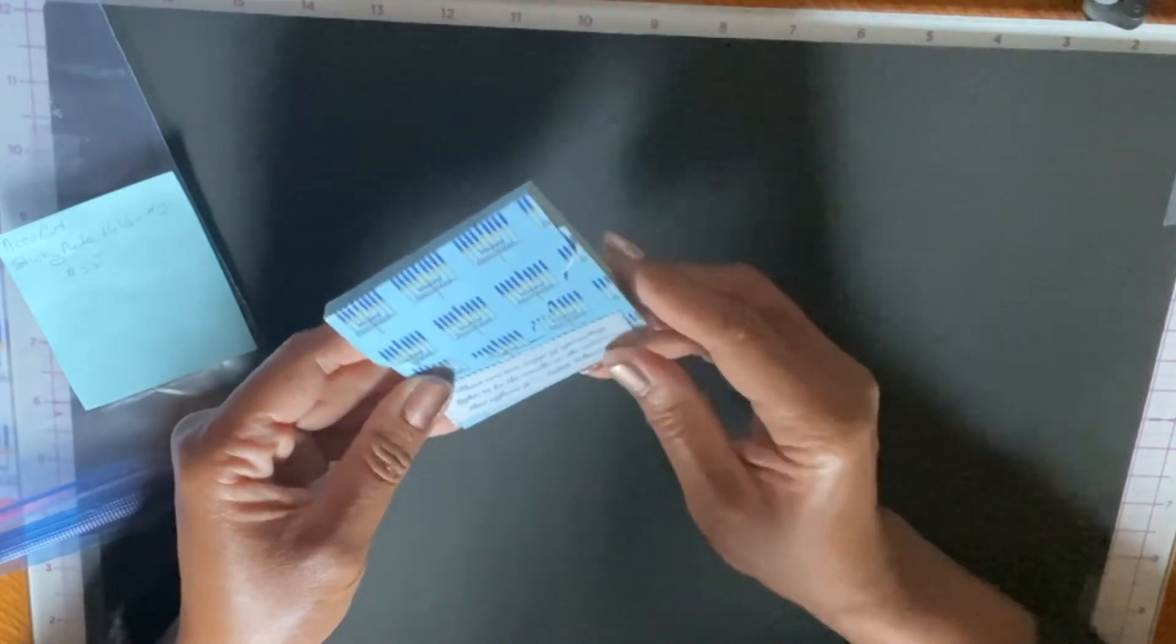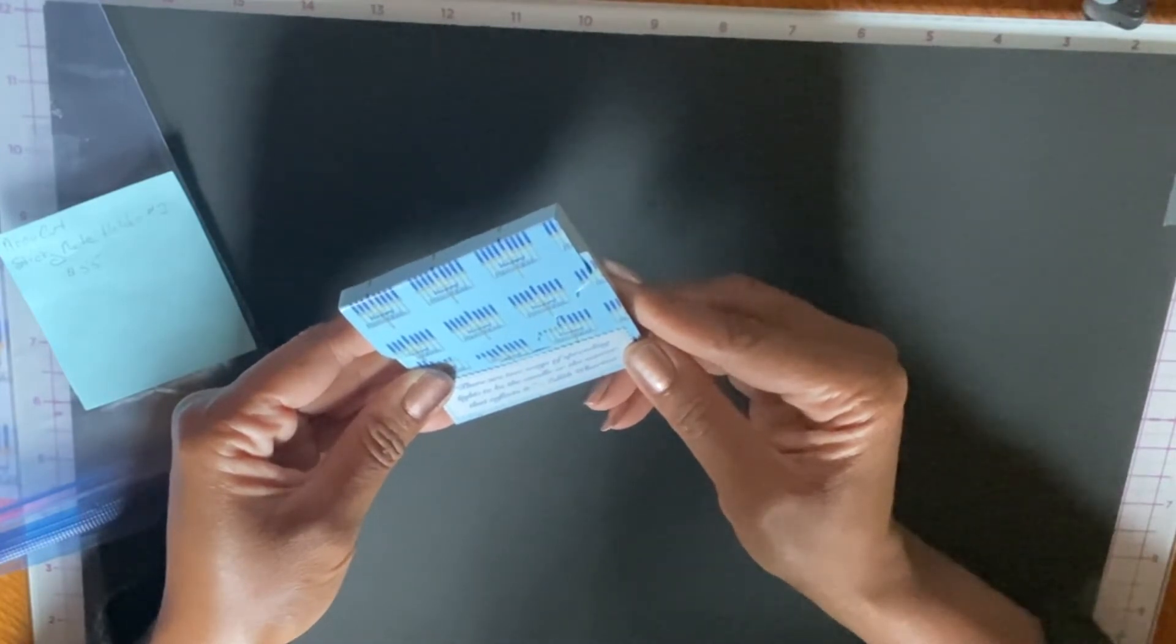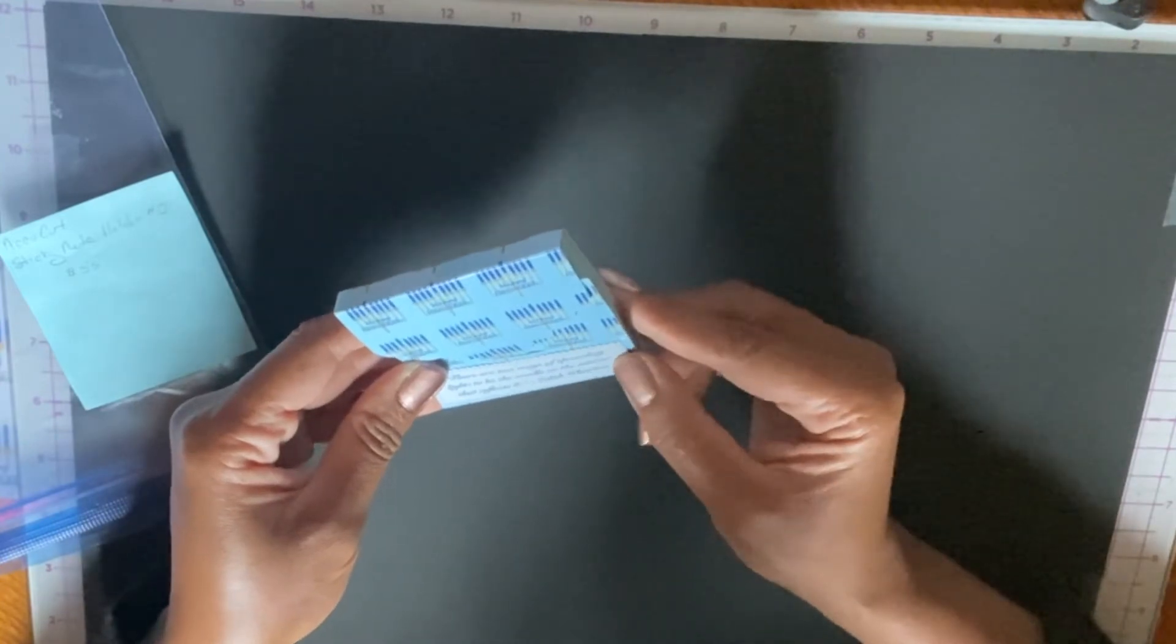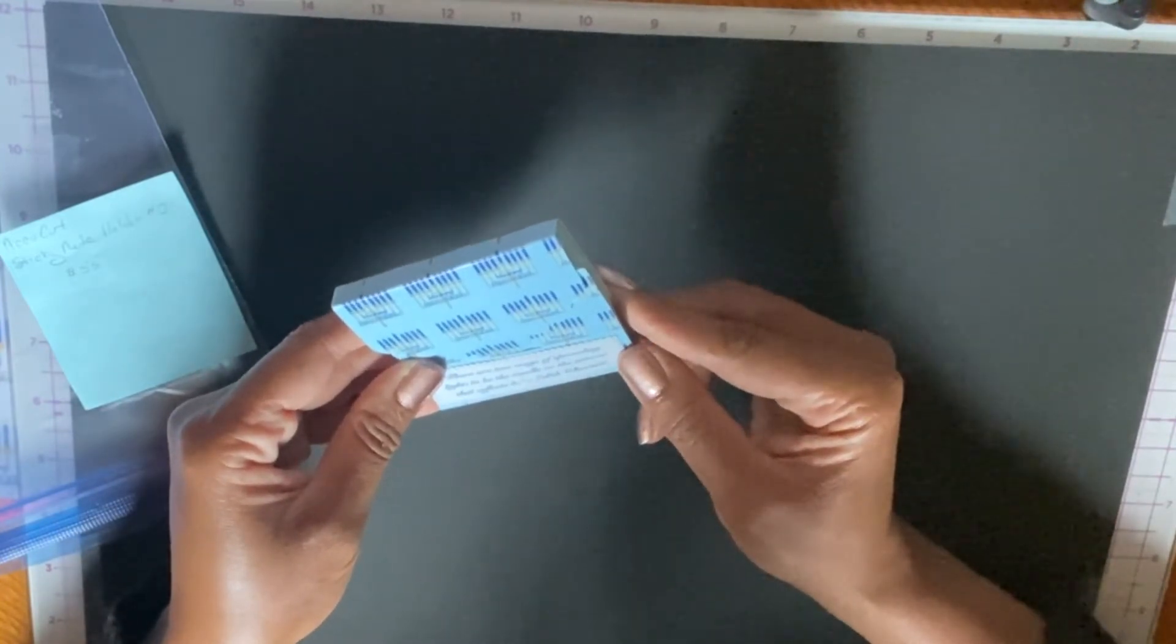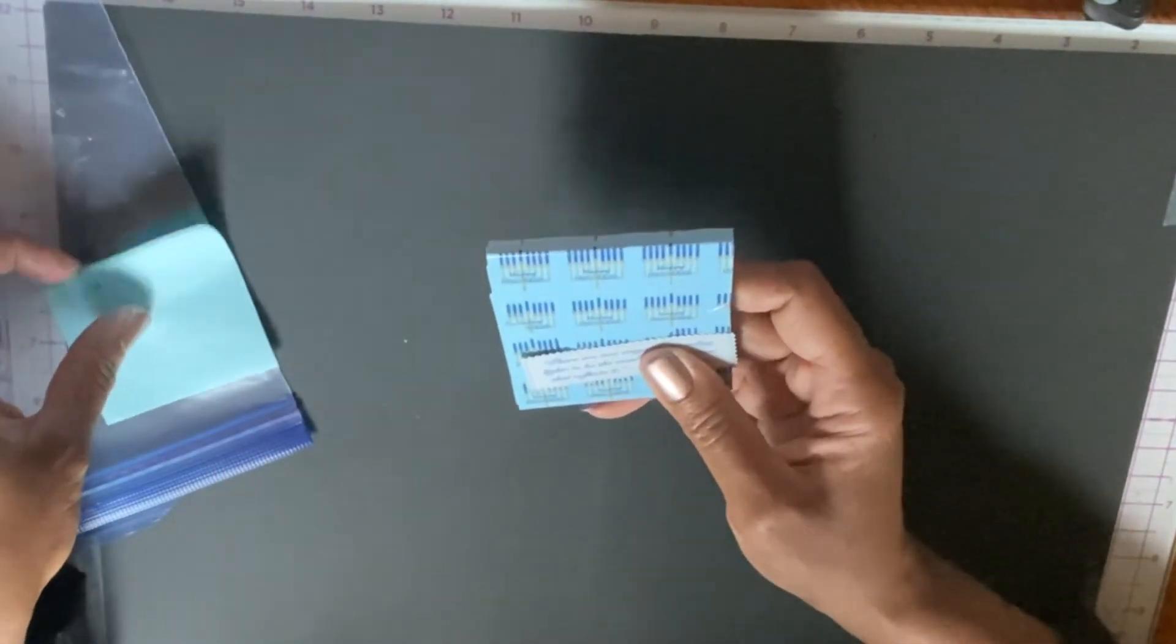She has a sentiment on here: There are two ways of spreading light, to be the candle or the mirror that reflects it. This quote is by Edith Wharton. This is very nice, this came out really beautiful. This is a sticky note holder.